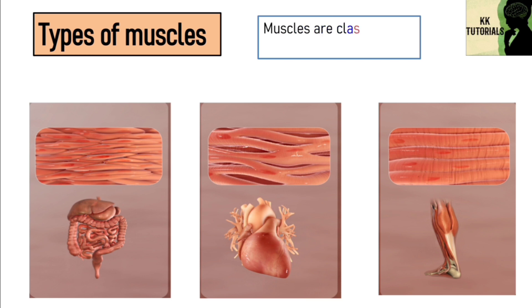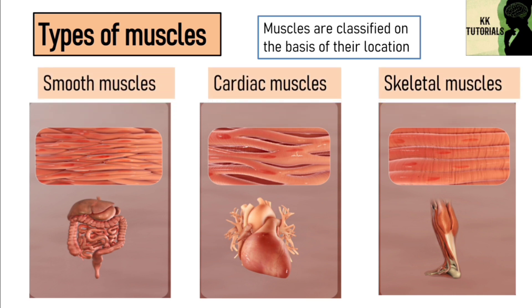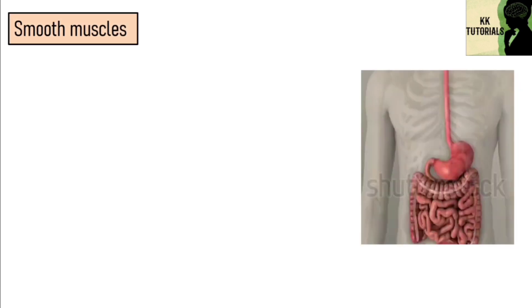Muscles are classified on the basis of their location. There are three types of muscles in the human body: smooth muscles, cardiac muscles, and skeletal muscles. Let's discuss about smooth muscles. Smooth muscles are involuntary muscles.